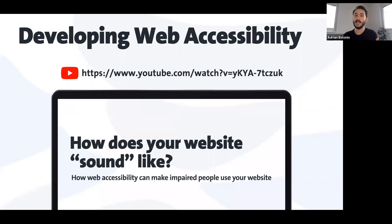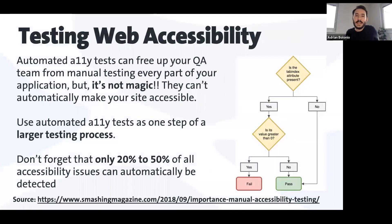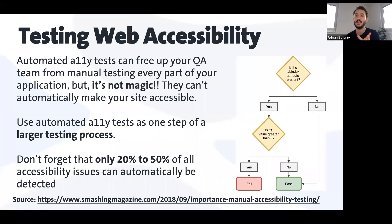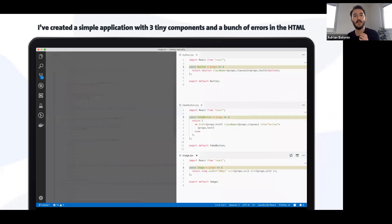I'm not going to talk about developing web accessibility today — I have a different talk called 'How Does Your Website Sound Like' which you can find on YouTube. I'm going to talk about testing web accessibility. Automated tests are very cool and they can free up your QA team from manual testing, but they're not magic. They cannot automatically make your site accessible. Automated testing can only detect 20 to 50% of accessibility issues, so we need to treat this automated phase as part of a bigger testing process where manual testing is equally important.